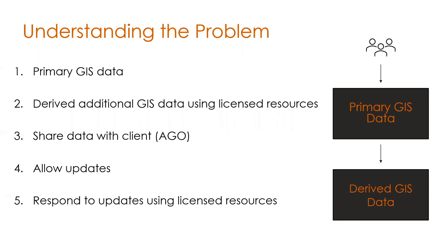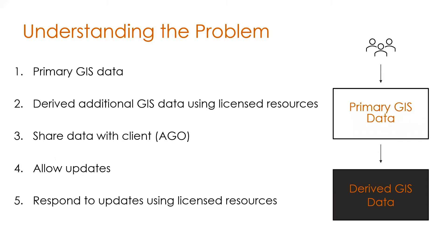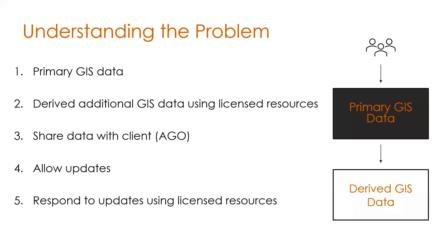To briefly review the problem we need to solve: we have primary GIS data, and we use licensed ESRI resources to derive additional GIS data. We want to share this data with the client and allow for updates to be made to the primary data. When updates are made, we need to be able to detect and respond to changes and ultimately update the derived dataset. Looking at the diagram on the right, when the client makes changes to the primary data, what we need is some kind of system to update the derived GIS data accordingly.